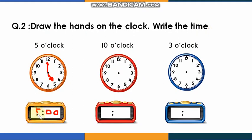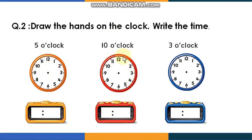Now I need your help. Get a piece of paper and draw the analog clock you can see here, then draw the hands. Remember there are two hands — one for the hour and one for the minute. You can use a cup to draw a circle, write the numbers from 1 to 12, and then draw the hands correctly to show the time written for each clock.